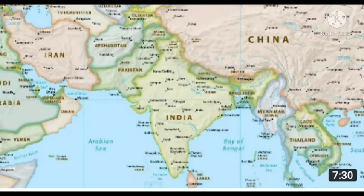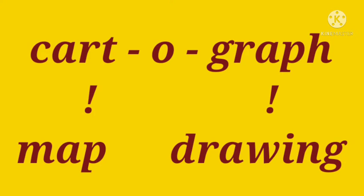It is not so easy. You need accuracy — a correct figure, a correct distance, and a scale. Accuracy and clarity are necessary. It is very important to draw a map: we need accuracy as well as clarity to represent the location and area of a particular place. Drawing of a map is called cartography, derived from the French word 'cartograph' — 'cart' means map, 'graph' means drawing.